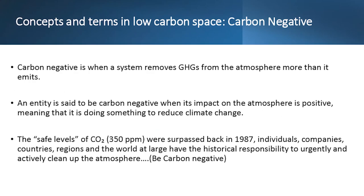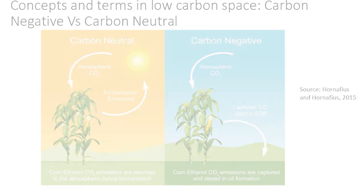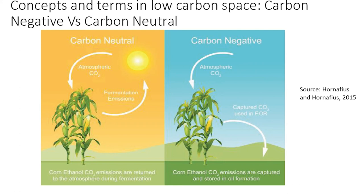Carbon negative is when a system removes greenhouse gases from the atmosphere more than it emits. An entity is said to be carbon negative when its impact on the atmosphere is positive — meaning it is doing something to reduce climate change and global warming. Many plantations and plant-based entities like nurseries are usually carbon negative. The safe level of carbon in the atmosphere was set at 330 parts per million, which was surpassed way back in 1987. This gives context to why we talk about carbon negative and carbon neutrality — the world has already surpassed its carbon budget.